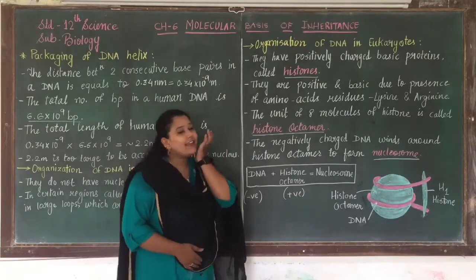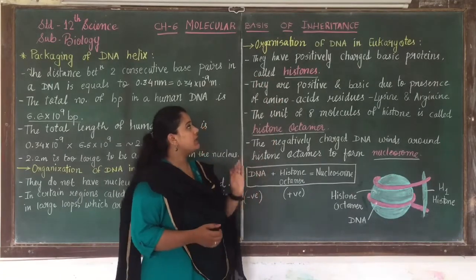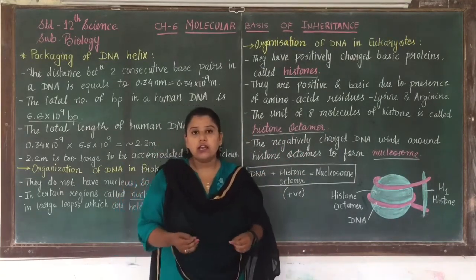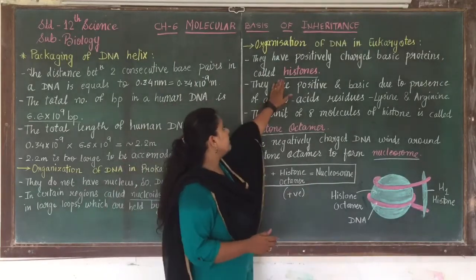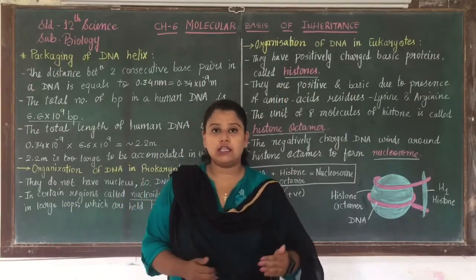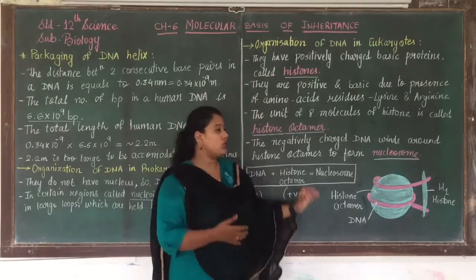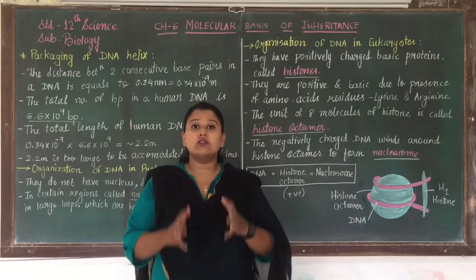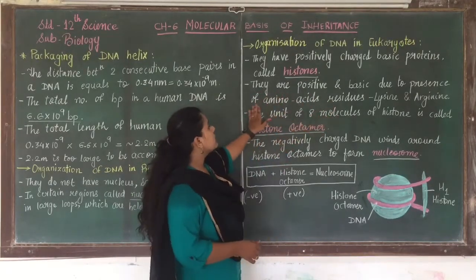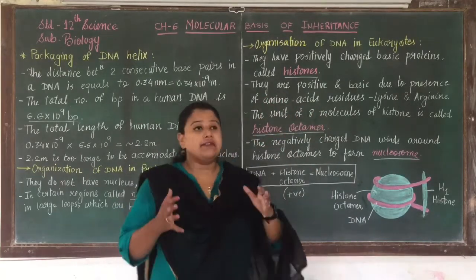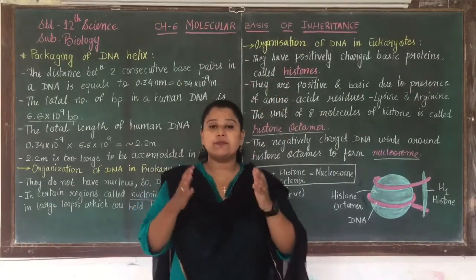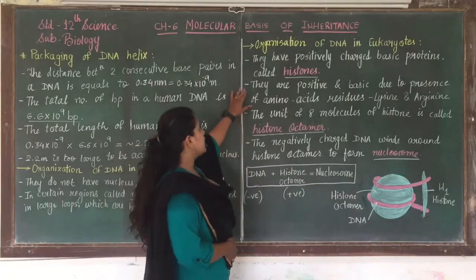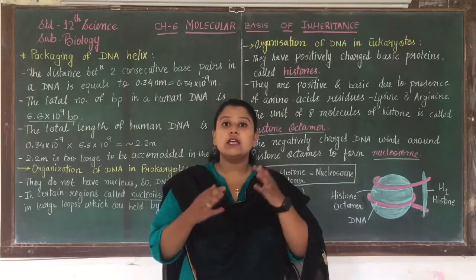Now for the organization of DNA in eukaryotes, they have positively charged basic proteins called histones. The DNA is negatively charged, while histone proteins are positively charged. The organization of long DNA in eukaryotes is carried out by histone proteins, which are positive and basic due to the presence of amino acid residues — lysine and arginine — which carry positive charge.